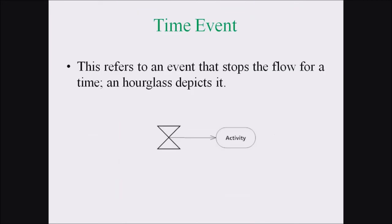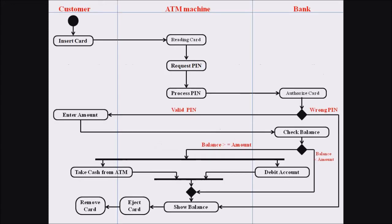Finally, we have the time event notation. This notation refers to an event that stops the flow for a particular time and is represented by an hourglass symbol. For example, when the customer inserts the card and the ATM machine is reading the data, the customer has to wait for a particular time until the machine responds. This wait can be represented by a time event notation.